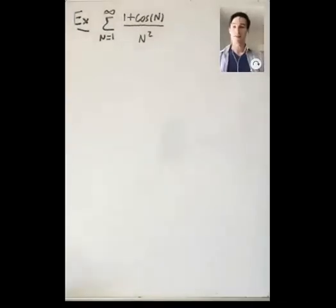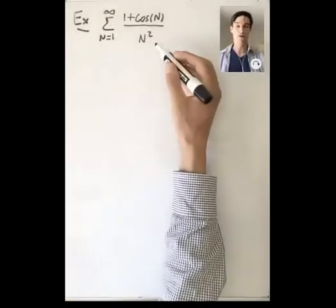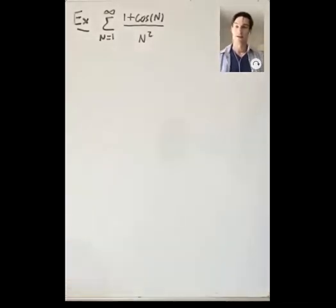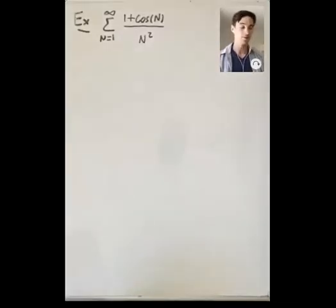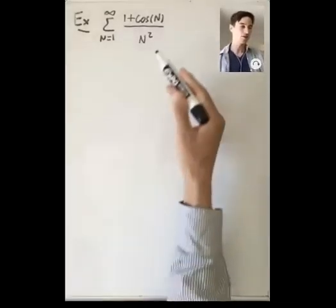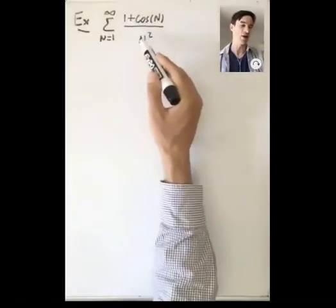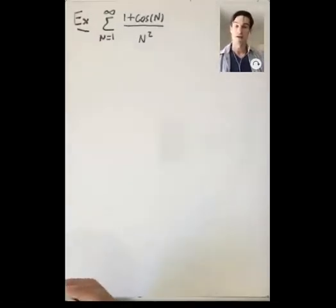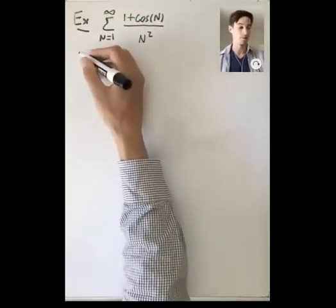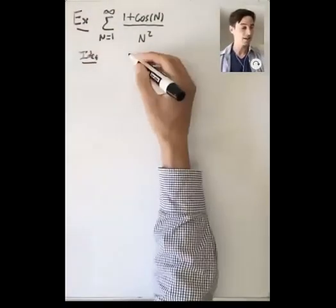For our first example, let's look at the sum from n equals 1 to infinity of (1 + cos n) / n². We're going to use the comparison test here. This 1 + cos n in the numerator is a little tricky, but this is really close to something we know well, which is 1/n². That gives us a p-series, something we understand really well.